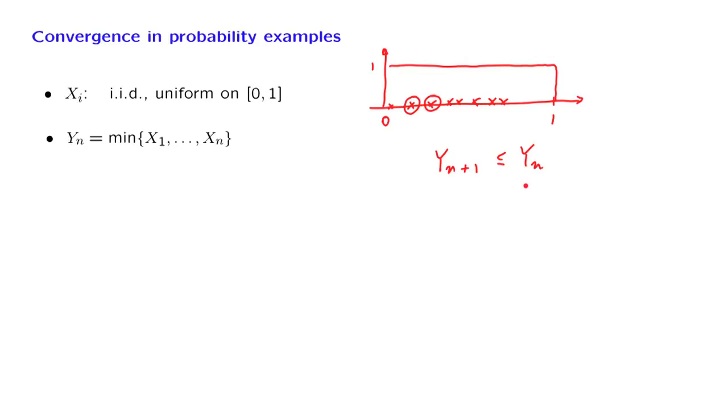This is always the first step when dealing with convergence in probability. The first step is to make an educated guess about what the limit might be, and then we want to verify that this is indeed the correct limit.